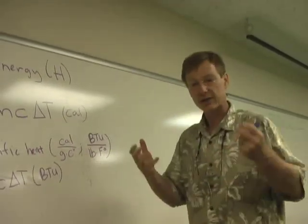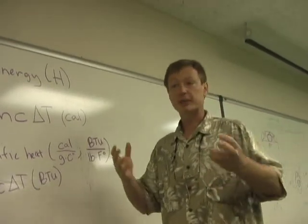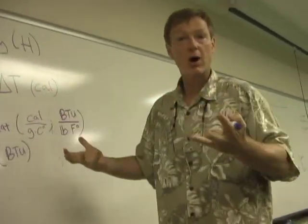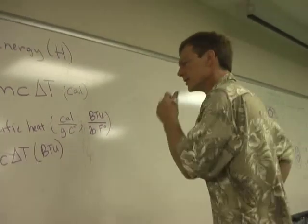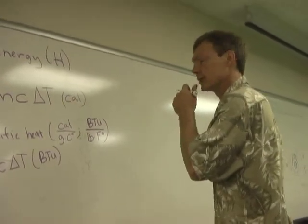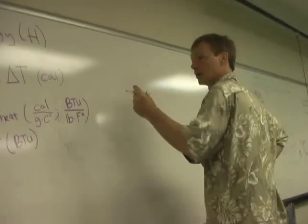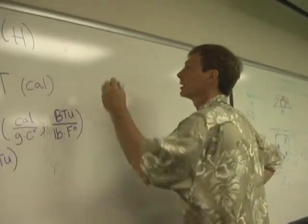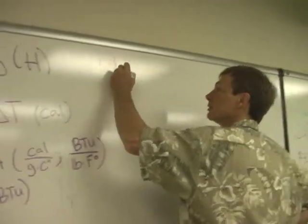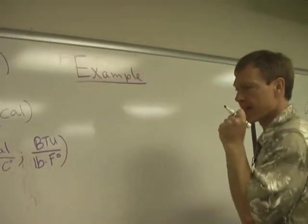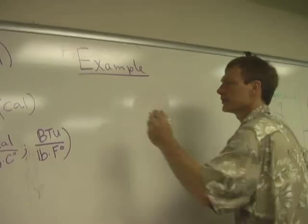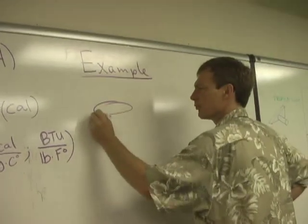The reason the Pacific Northwest has such moderate temperatures is because it gets its air from over the water. That moderates the temperature much better. So let's do some examples. I'll do a metric example and I'll do an English example.